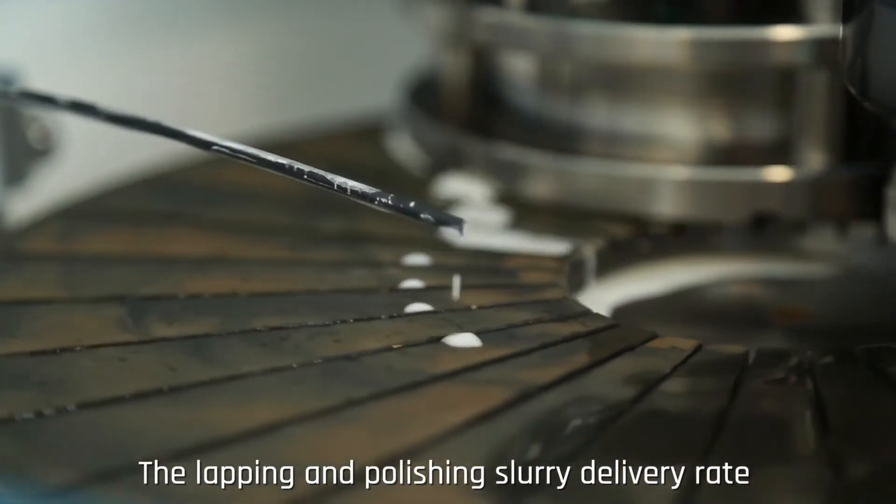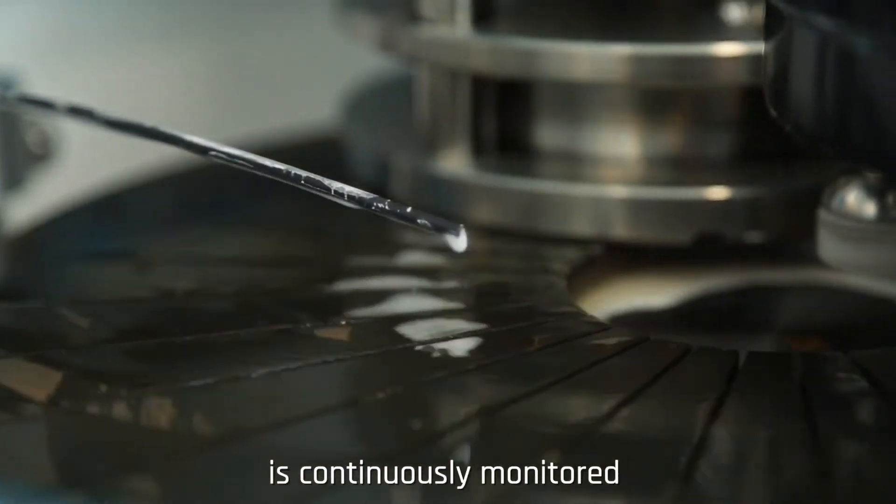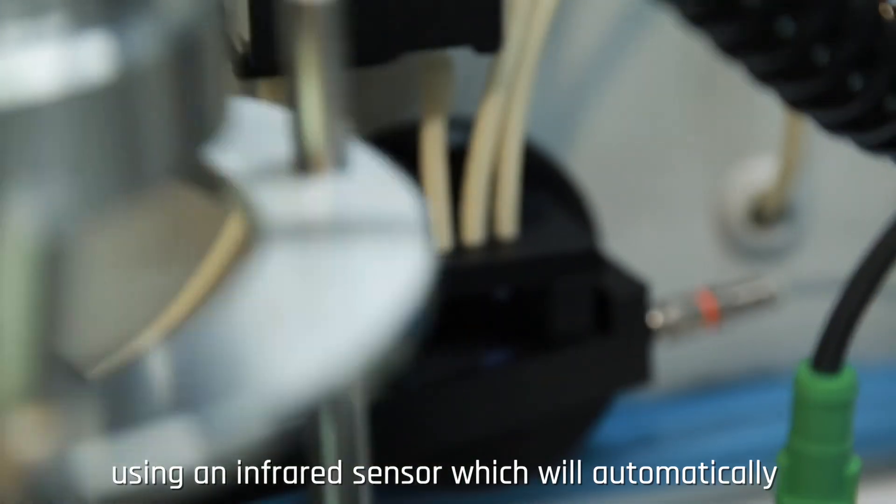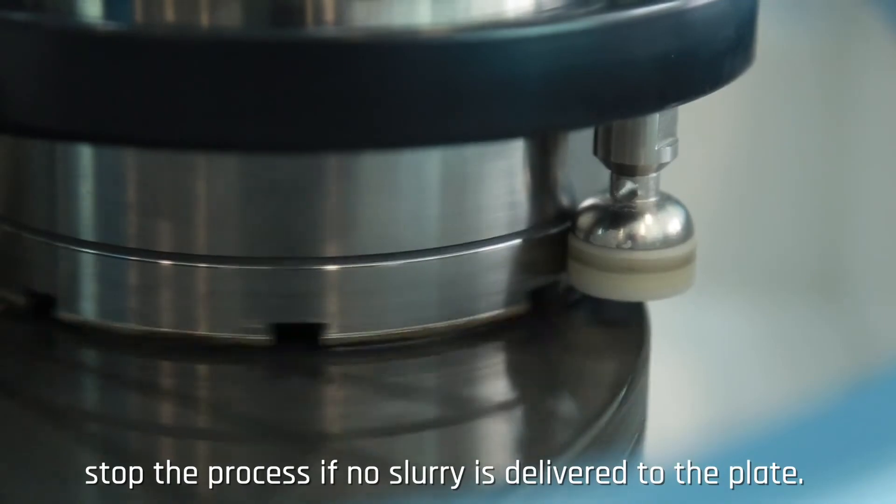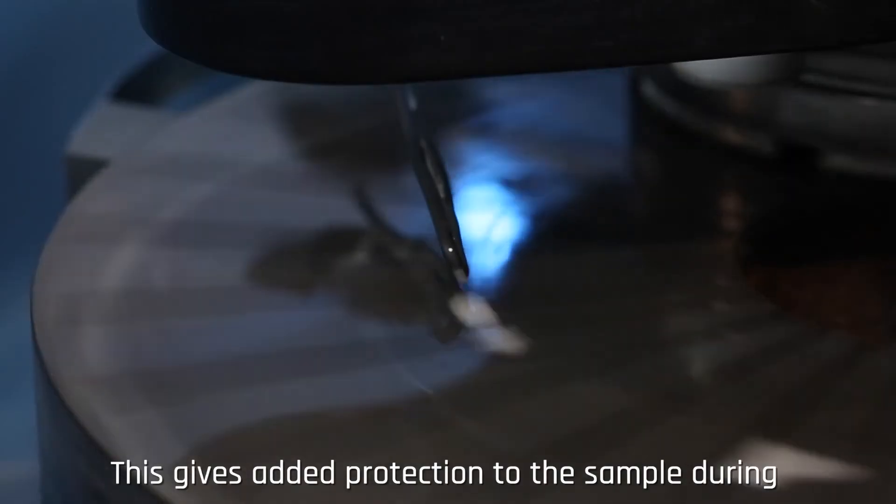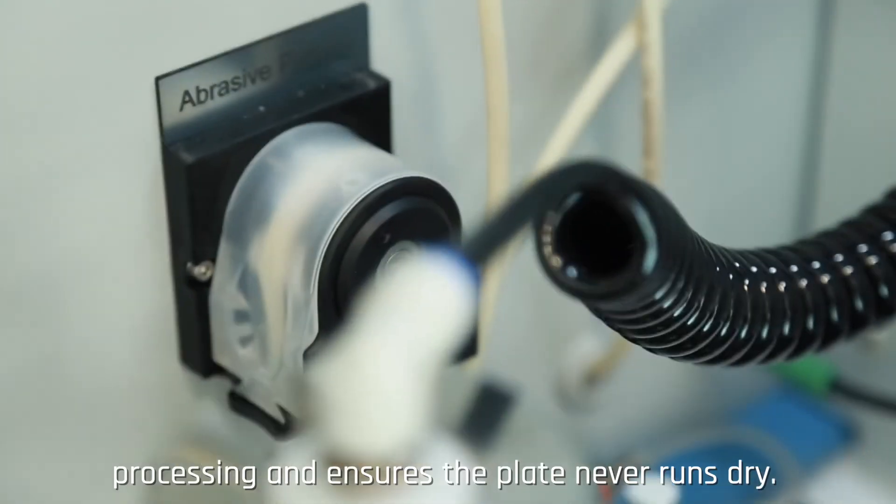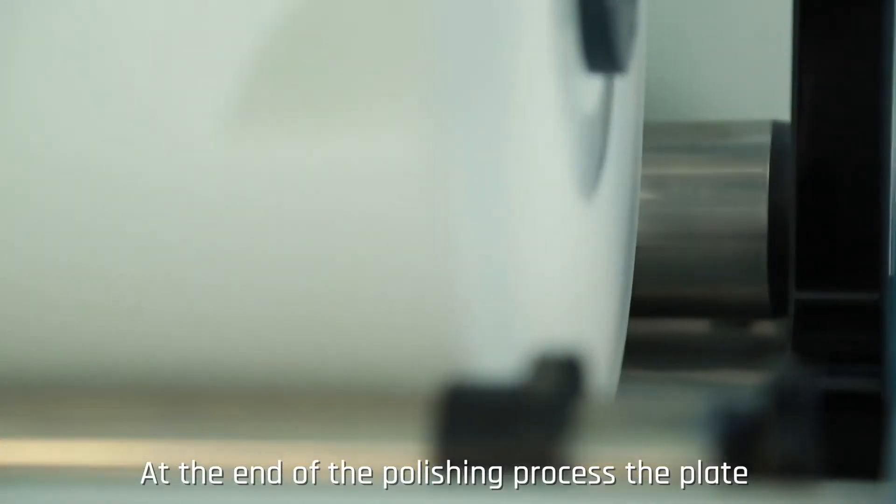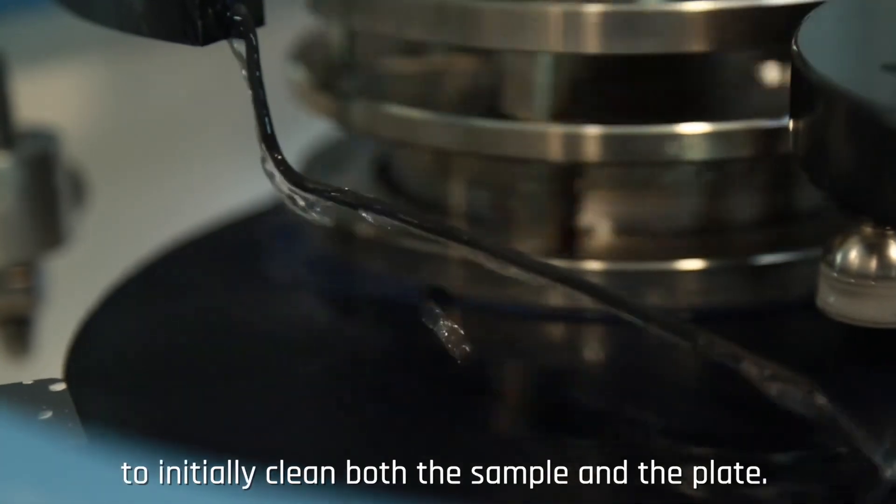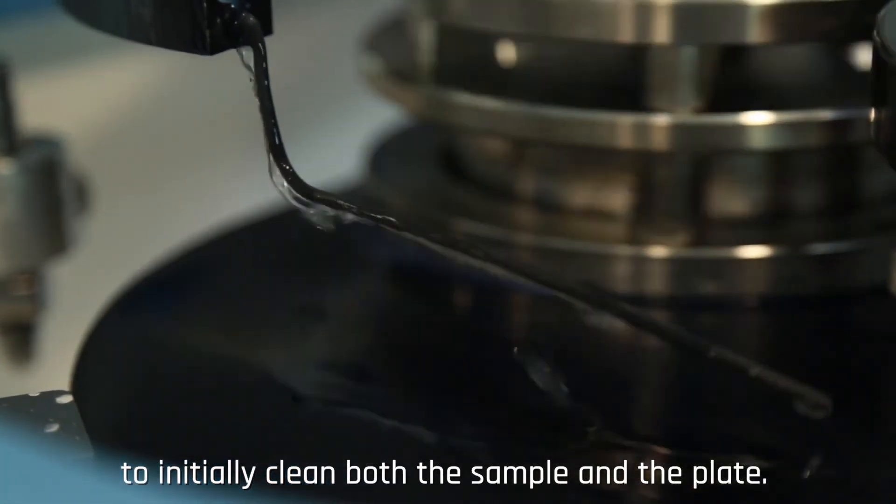The lapping and polishing slurry delivery rate is continuously monitored using an infrared sensor which will automatically stop the process if no slurry is delivered to the plate. This gives added protection to the sample during processing and ensures the plate never runs dry. At the end of the polishing process the plate can be flushed with deionized water to initially clean both the sample and the plate.